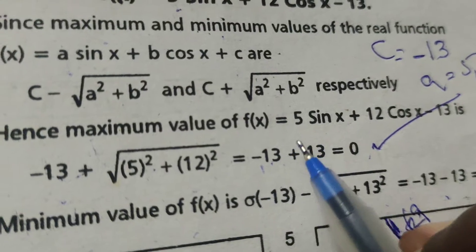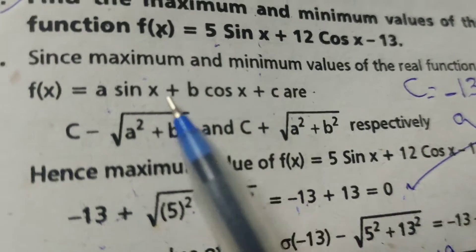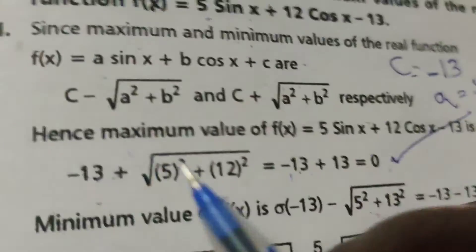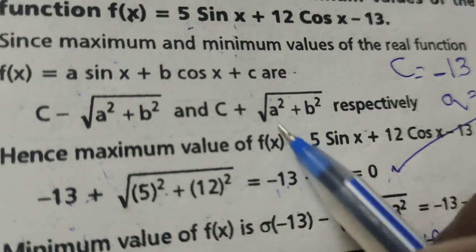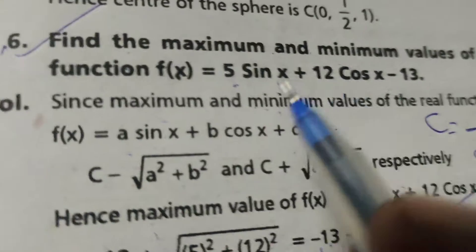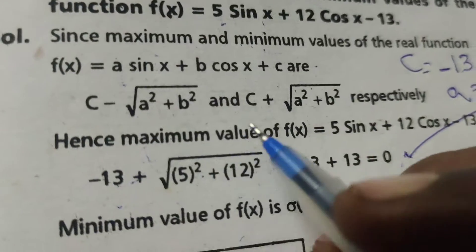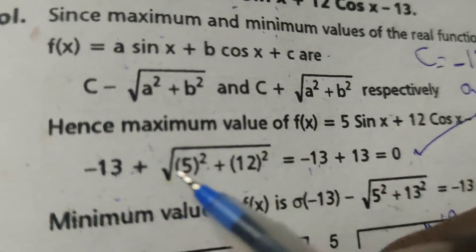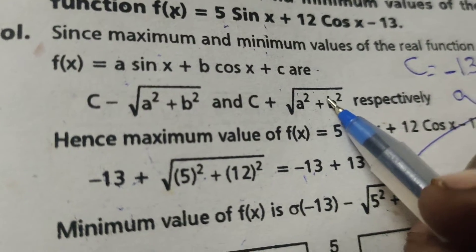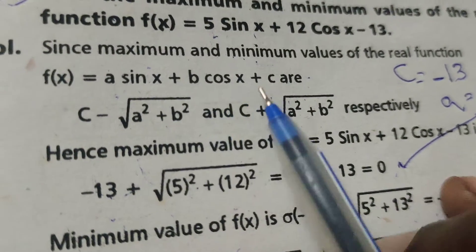Now, applying this formula to our function by comparing with the standard form a·sin x plus b·cos x plus c, the maximum value equals c plus root of a² plus b². Here c equals minus 13, a equals 5, and b equals 12.